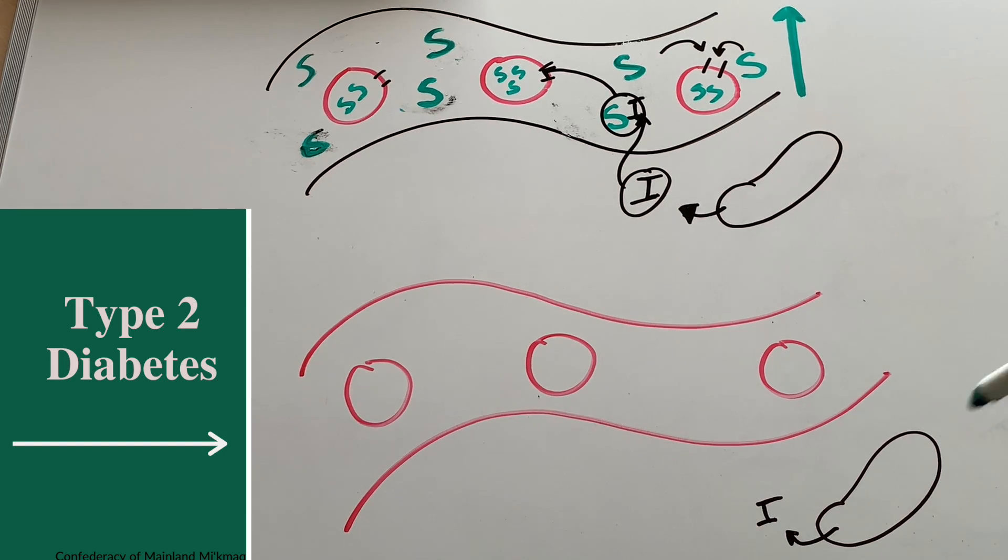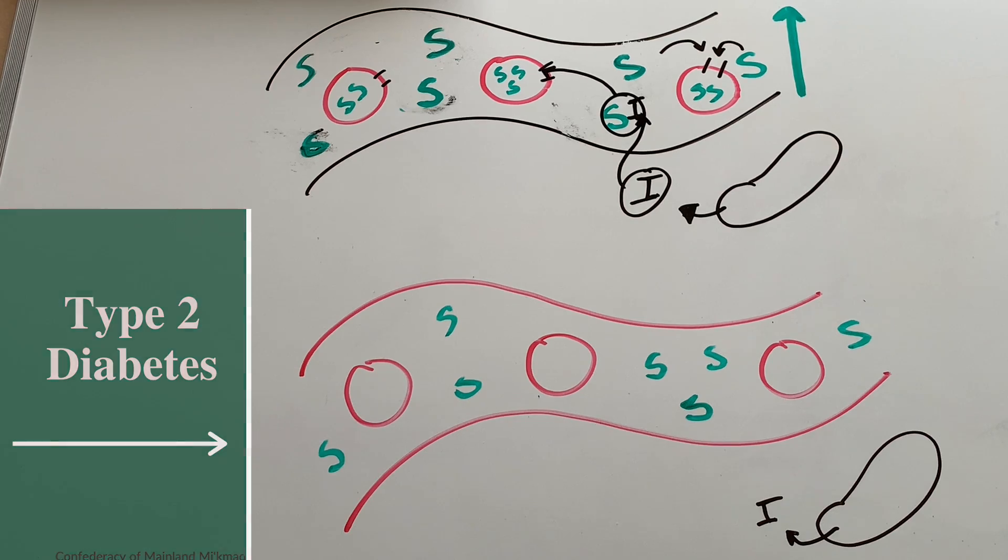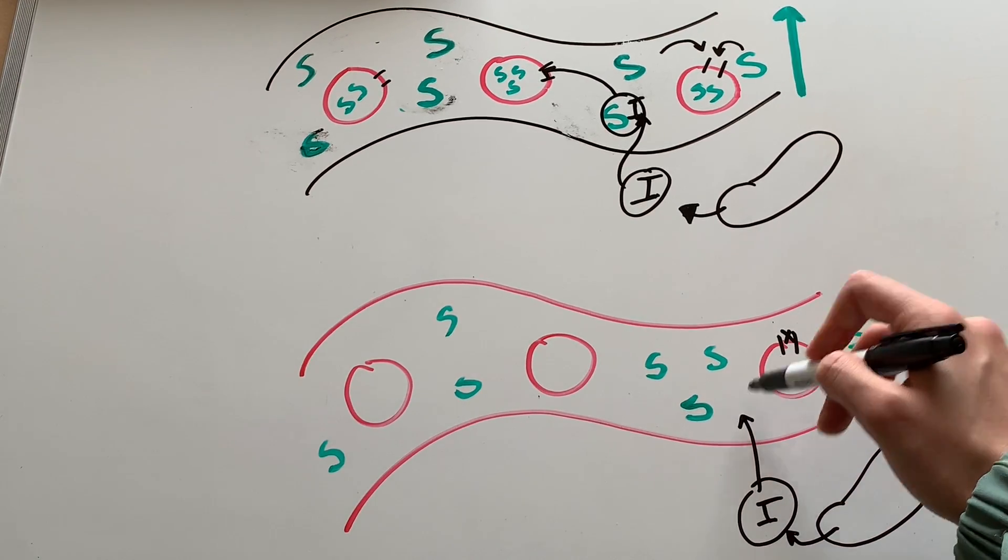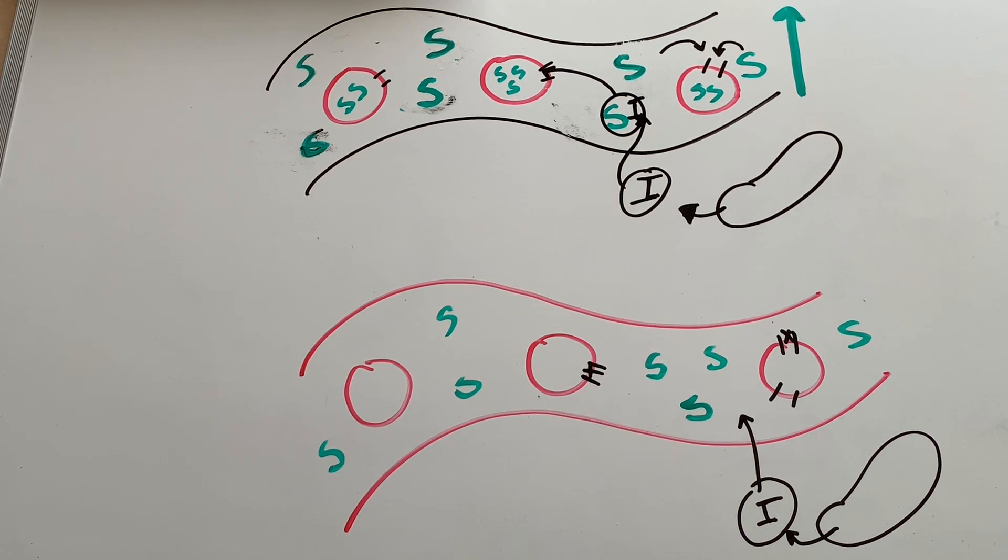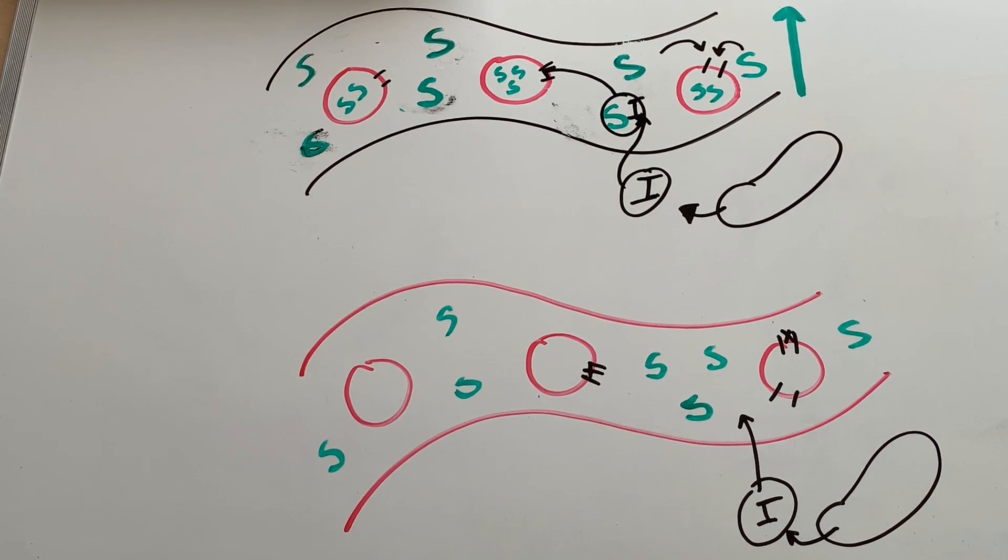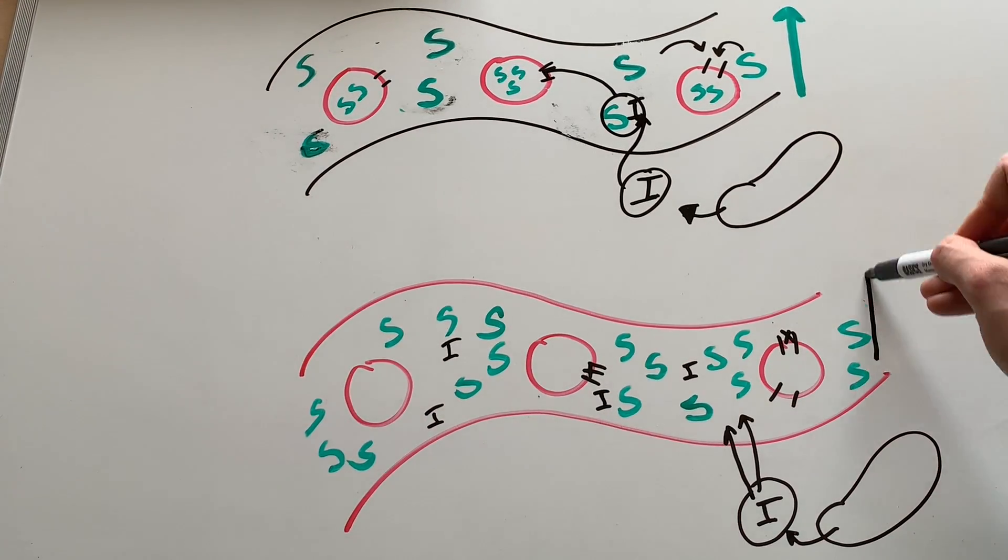So when we eat food, the food still changes into sugar, but the sugar isn't able to get into our cells. Since the insulin is the key that unlocks the cell doors, having type 2 diabetes is like having rusty locks and keys. This causes sugar to build up in the blood, which causes high blood sugars.